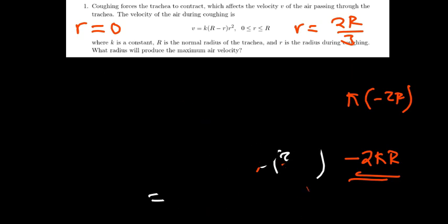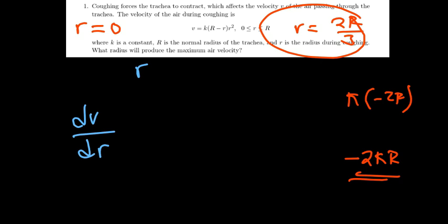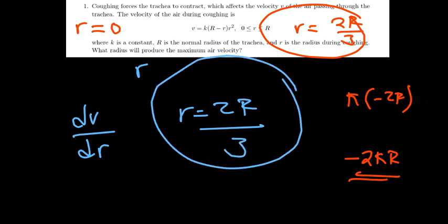So which radius has given us a maxima? It's this radius. Find the radius that will produce maximum air velocity. The one that's maximizing the change of v in respect to our radius is basically r equals 2R/3. This is our radius. Thank you.